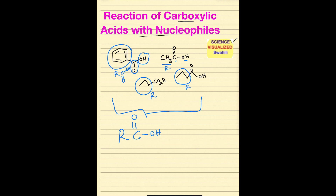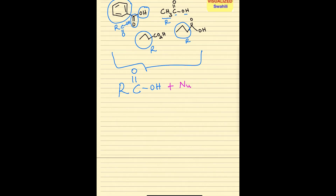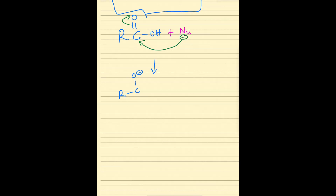Now the question is, how do they react with nucleophiles? This is usually done under acidic or basic conditions. What will happen is that the nucleophile, using its lone pair of electrons or a negative charge, will attack the electrophilic carbonyl carbon, and at the same time the double bond electrons will move to oxygen to become an O-. Now you have an O- there, you still have the OH there, and you have connected the nucleophile to that carbon. This is called the tetrahedral intermediate.